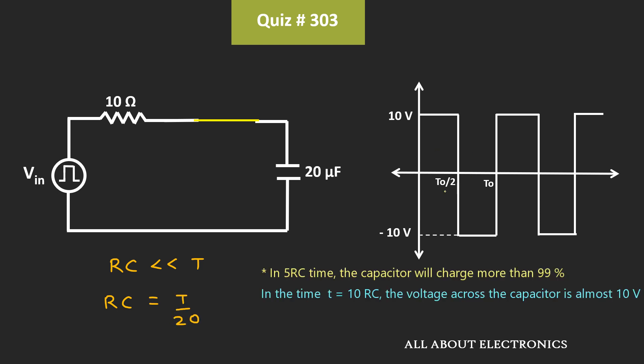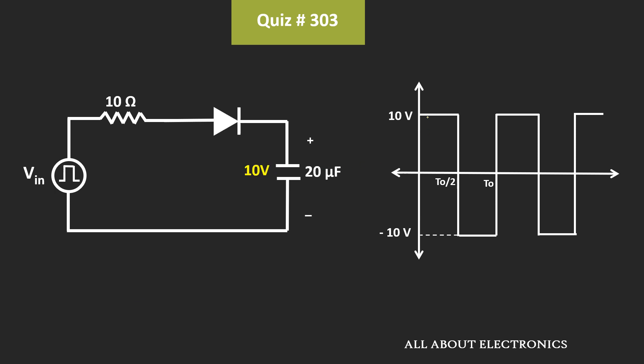That means during the positive half cycle, this capacitor will be charged fully, and the voltage across this capacitor will be equal to 10V.